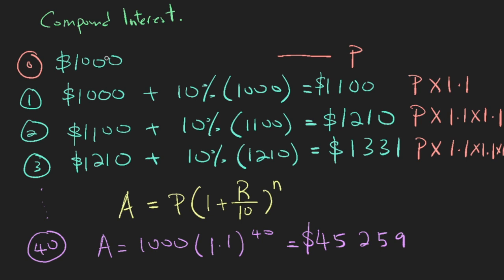Now this is only $1,000. Imagine if you were to invest $10,000, you will have almost half a million. So the magic of compound interest is here.